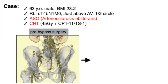The most important problem was the presence of arteriosclerosis obliterans. As shown here, right-sided arterial occlusion was observed from the common iliac artery to the femoral artery. In addition, the left common iliac artery was also severely stenotic.